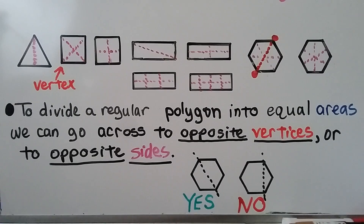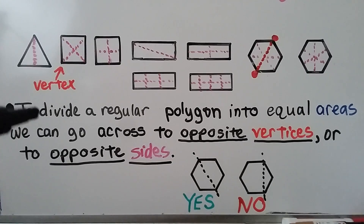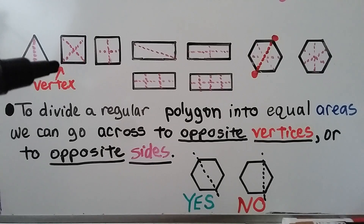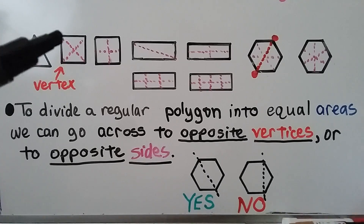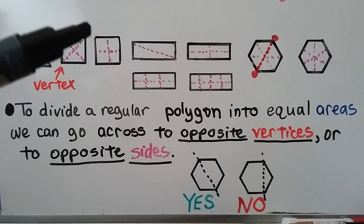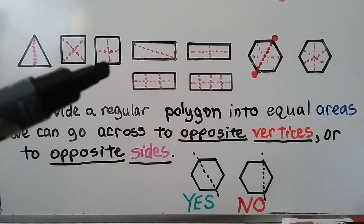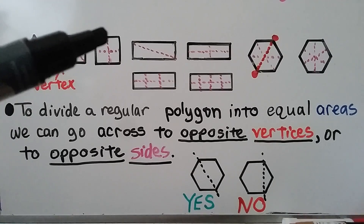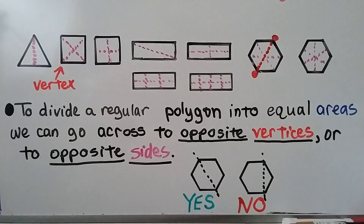To divide a regular polygon into equal areas, we can go across to opposite vertices. Vertices means more than one vertex, and a vertex is a corner. For this triangle, we started at a vertex but went to an opposite side and made two triangles with equal area. For this square, we went from one vertex to the opposite side and then from another vertex to the opposite side, making four equal areas. We could also cut the square from one side down to another, making four equal areas.